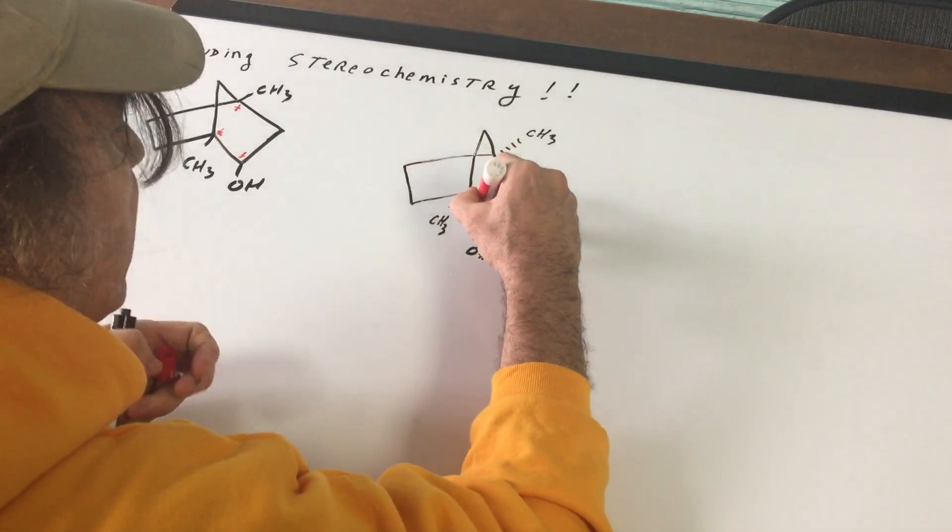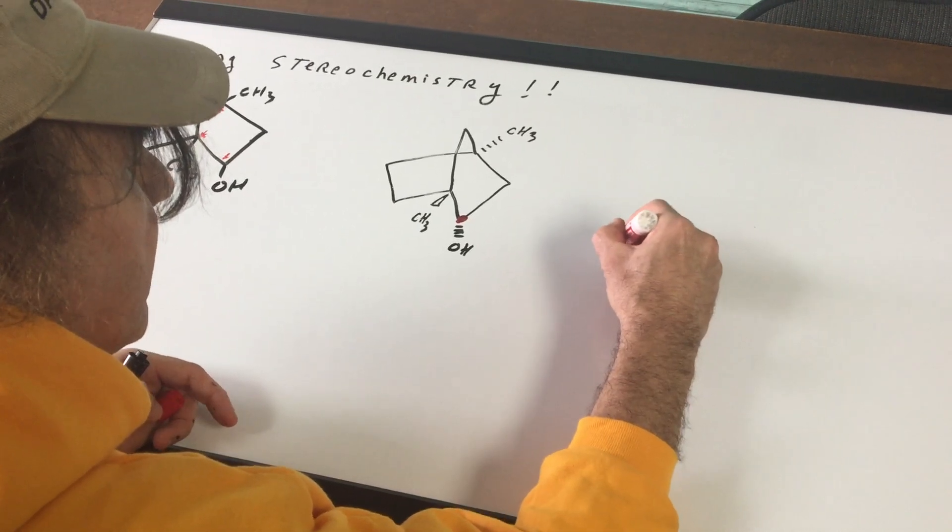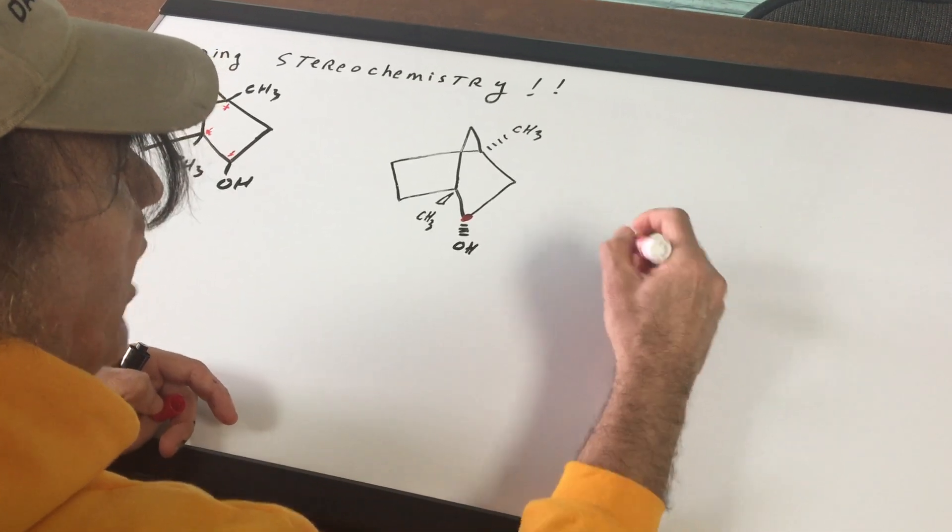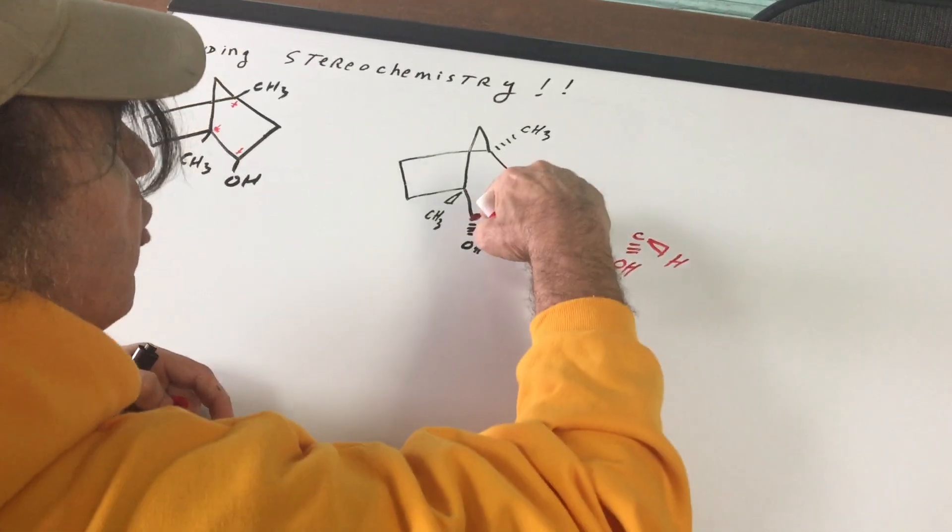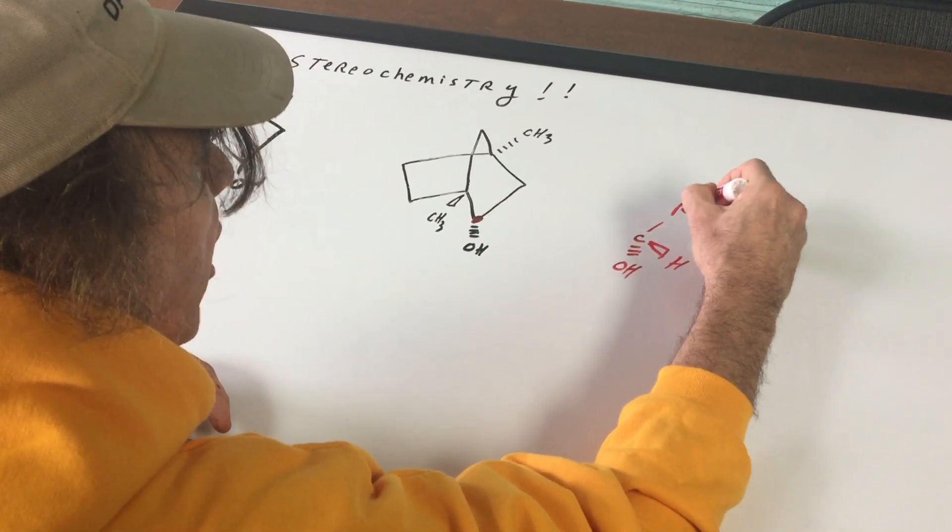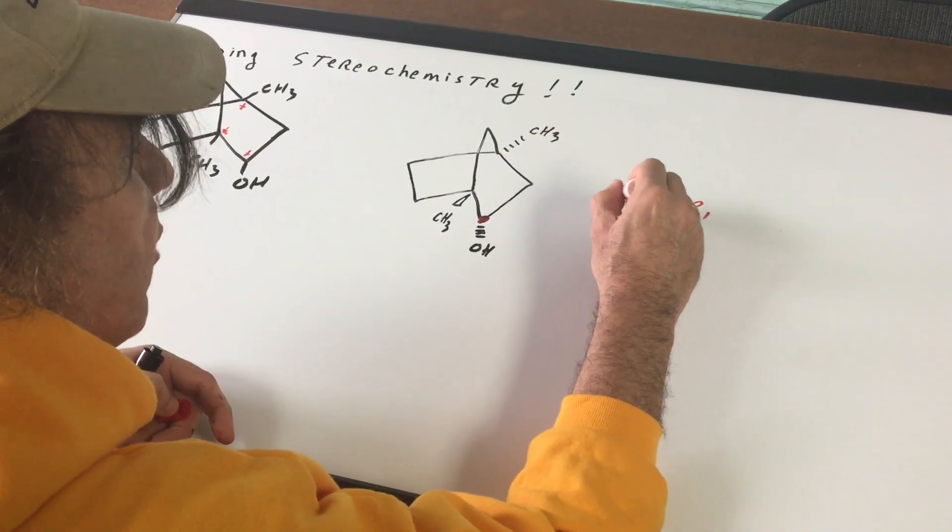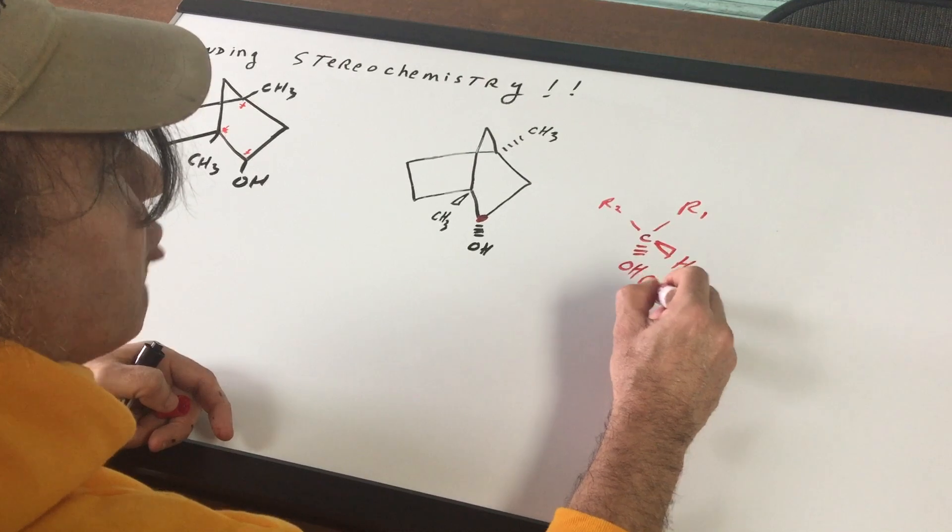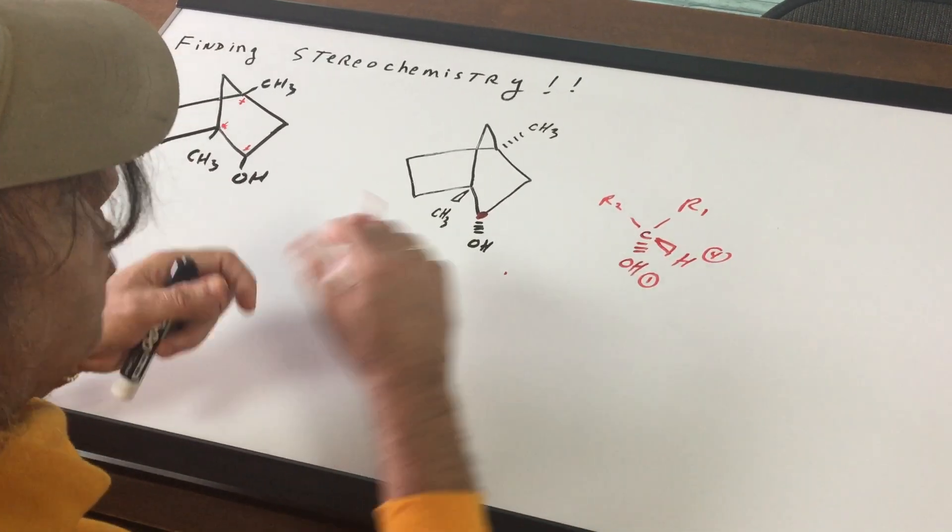Now, the first thing we do is let's go to this carbon right here, and I'll go off to the side. That's going as a wedge, as a dash, and then I'll put the wedge, that's the H. You got this group going up, I'll call this R1, and you got this path going this way, is R2. The OH is 1, the H is 4.